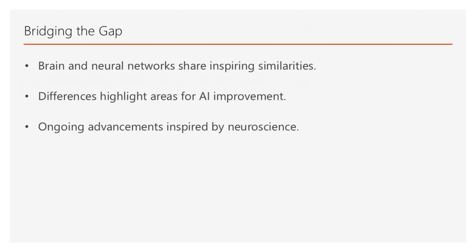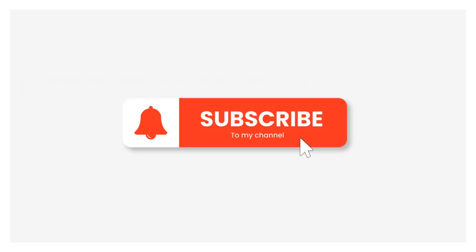To summarize, the brain and neural networks share inspiring similarities and fascinating differences. By mimicking the brain's efficiency and adaptability, AI continues to evolve. The journey of bridging this gap is ongoing, driven by advancements in neuroscience and the pursuit of creating more intuitive, adaptable AI systems. Thank you for watching this lecture. I hope you found the subject as exciting as I did.